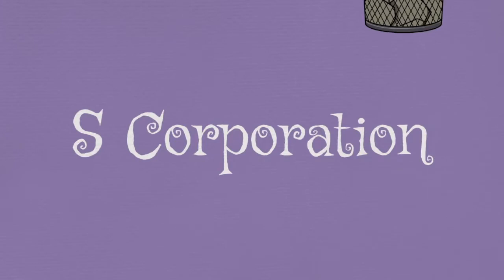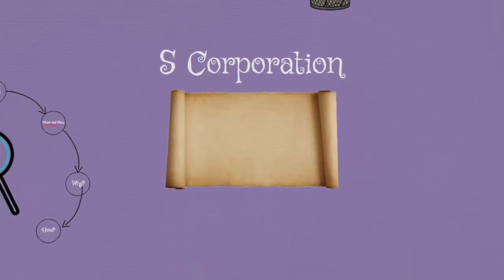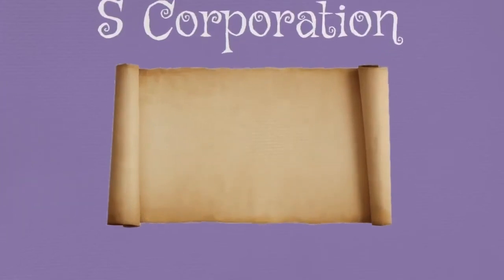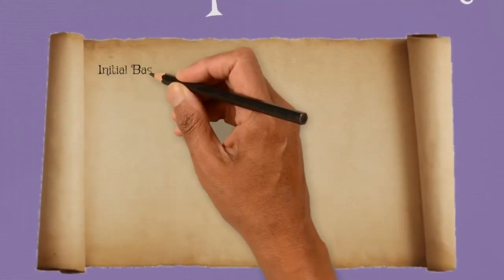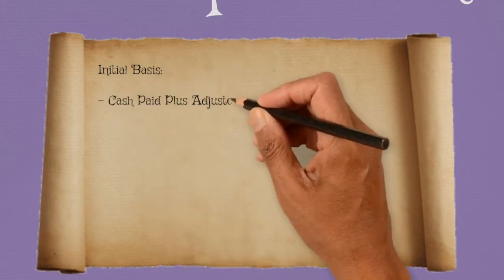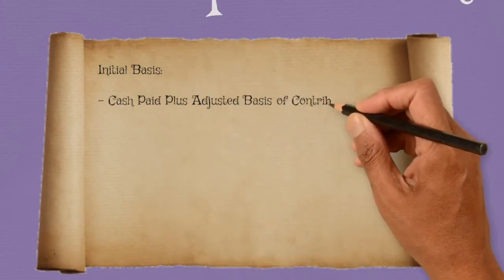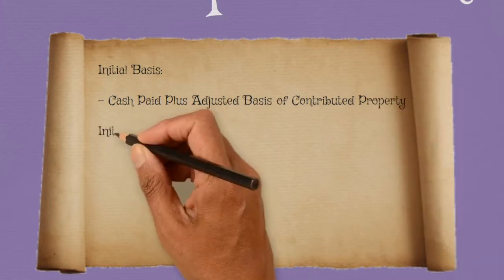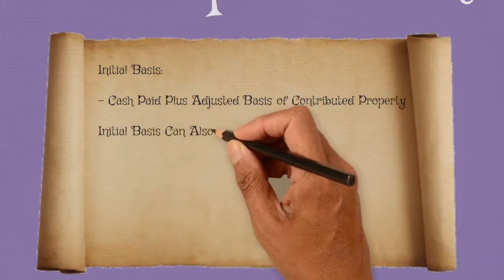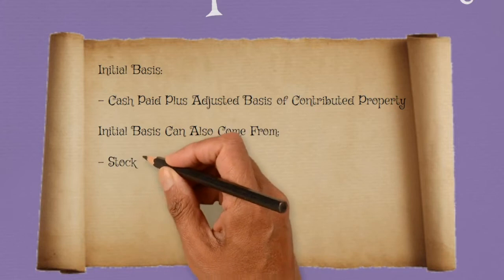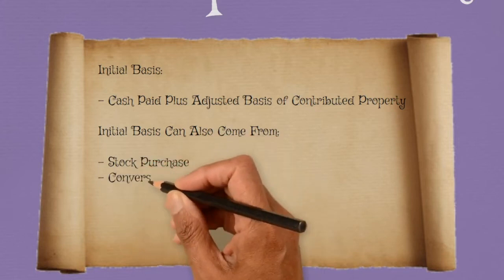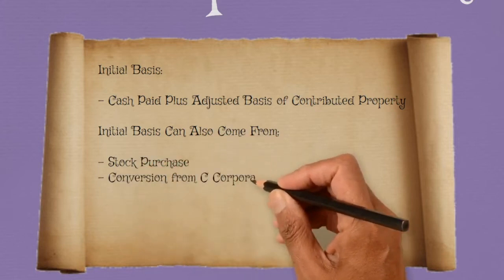We're going to focus mostly today on an S-corporation. The partnership rules are more expansive, but the core partnership basis rules are mostly the same as an S-corp, but we'll go over some differences later. First aspect: initial basis. In the formation of our S-corp, our initial basis equals the cash we paid for it plus the adjusted basis of any contributed property. Outside of forming the corporation, a new shareholder's initial basis can also come through stock purchase, conversion from a C-corporation, gift, or inheritance.